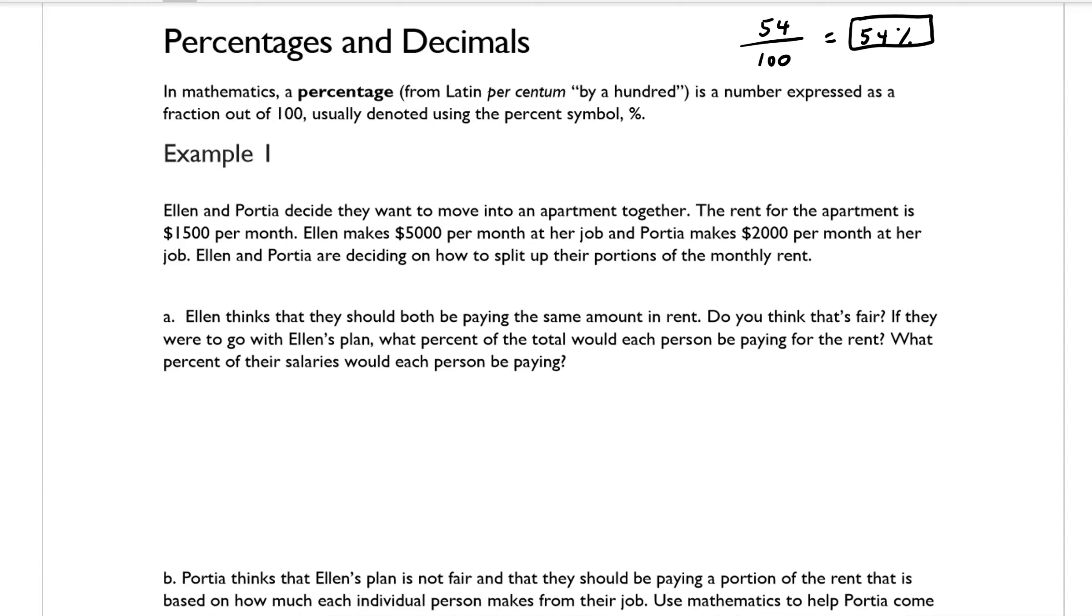So that first question is asking if each person was paying $750 out of the total $1,500, that would simplify to one half, which is also equivalent to 50 out of 100, which would tell us that each person would be paying 50% of the total rent. So Ellen and Portia would each be paying 50% of the total rent.